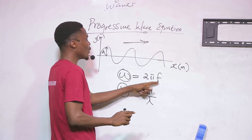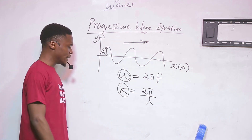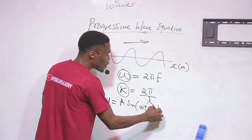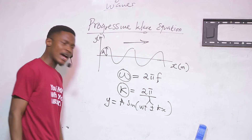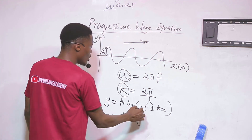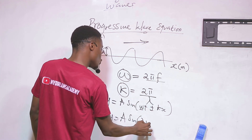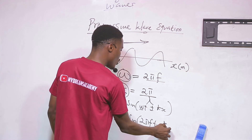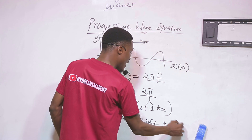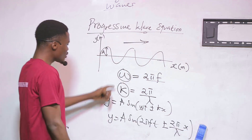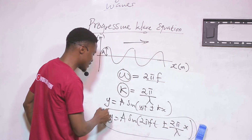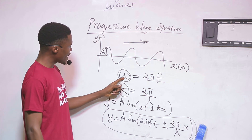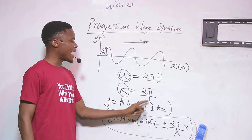Now that we know ω = 2πf and k = 2π/λ, the wave equation y = A sine(ωt ± kx) can be rewritten in expanded form as: y equals A sine(2πft ± (2π/λ)x). Make sure you don't confuse yourself — this is just the same equation with omega and k replaced by their formulas.